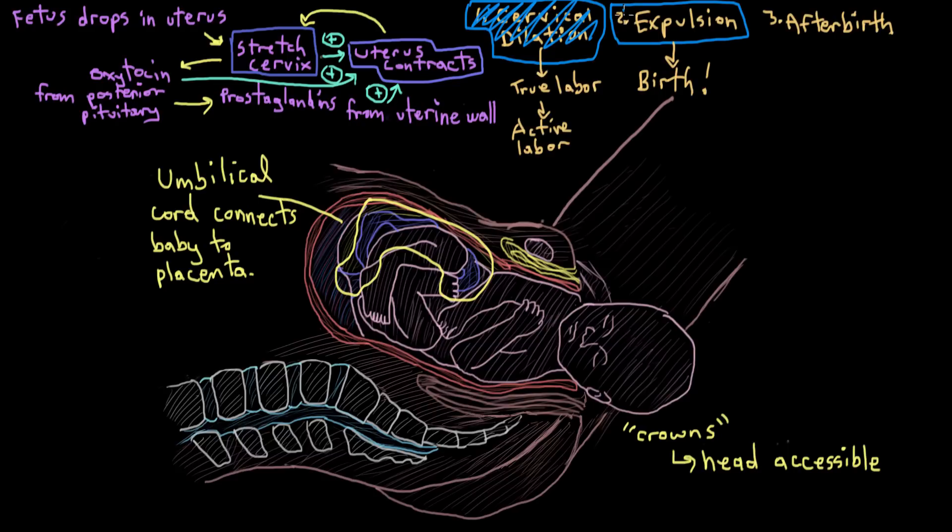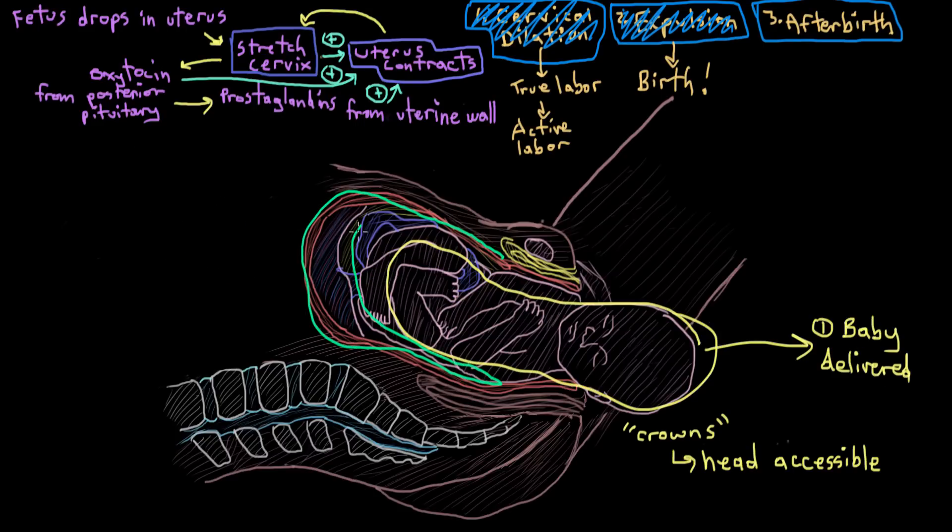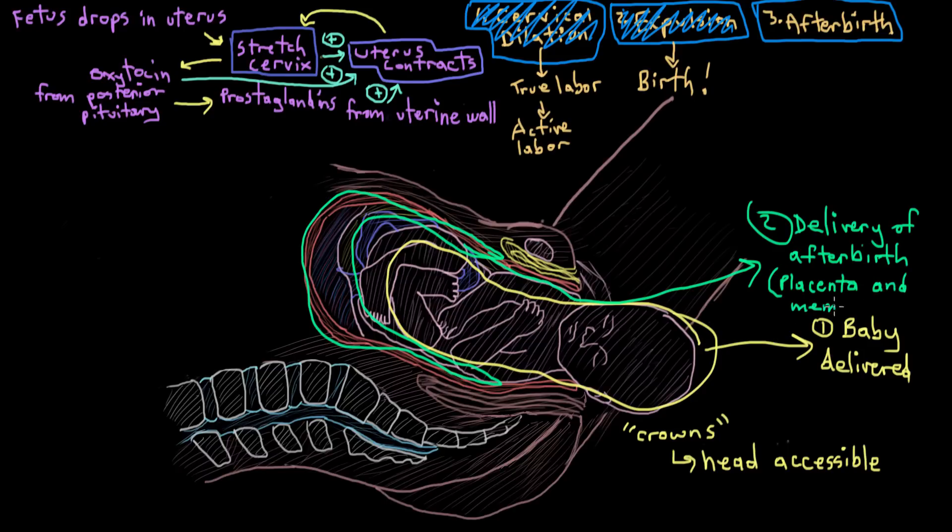The final step of labor is the delivery of the placenta and its associated membranes, collectively called the afterbirth. Once the baby's delivered, the uterus continues to contract, and in doing so, it sort of causes the placenta to detach from the walls of the uterus and eject out of the vagina. And this actually happens pretty easily compared to the birth of the baby, or so I'm told.